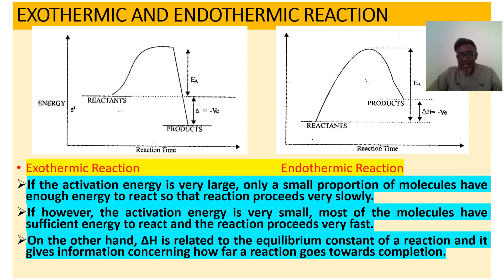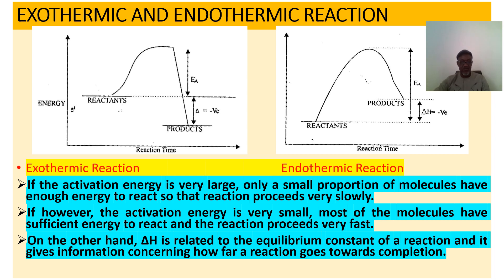In the second diagram, the energy of the reactants is lower than the energy of the products — that is endothermic reaction, meaning absorption of heat from the surroundings. If the activation energy is very large, only a small proportion of molecules have enough energy to react, so the reaction proceeds very slowly. But if the activation energy is very small, most of the molecules will have sufficient energy to react, and the reaction will proceed very fast.